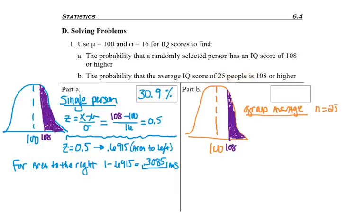They both ask for 108 or higher. So I still have a bell-shaped curve centered over 100, where 108 is the score I want. It's still or higher, so I still shade to the right. But the twist here is I'm working with a group average, specifically 25 people. So the first question asked for a single person. The next one asked for a group of people, 25 to be exact.